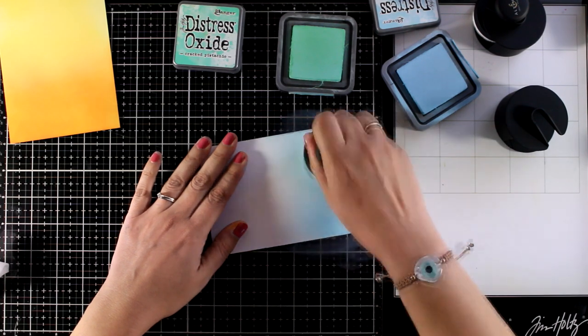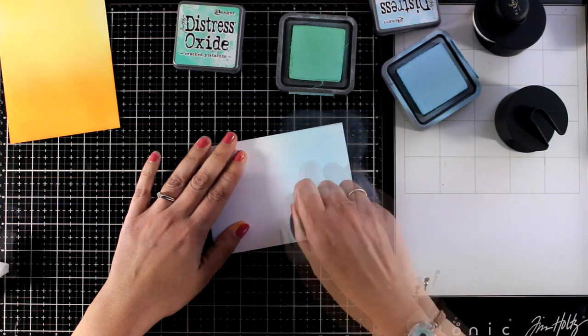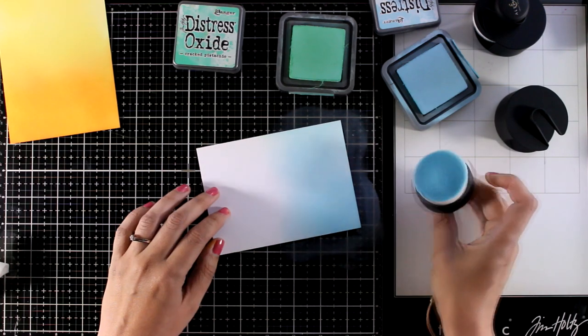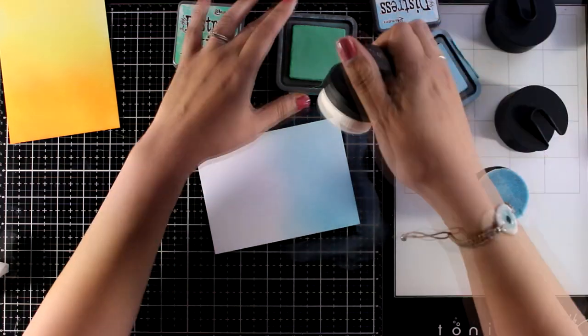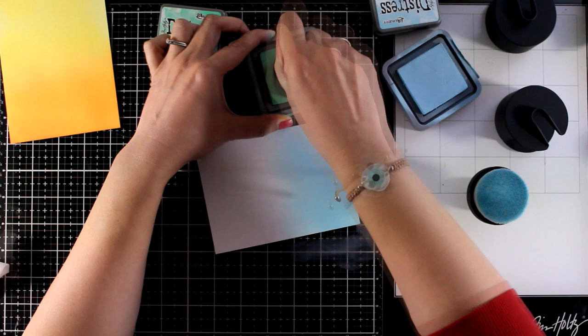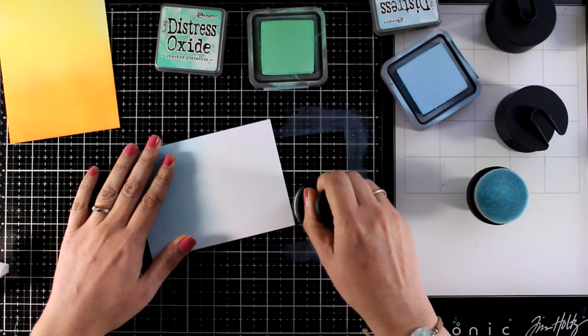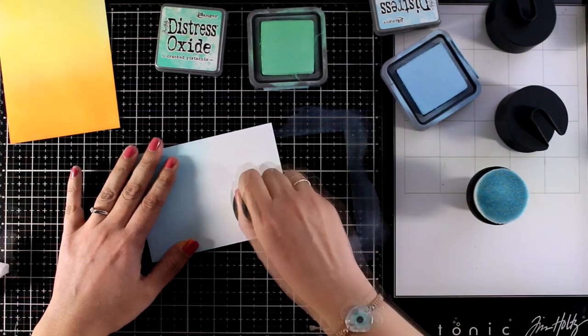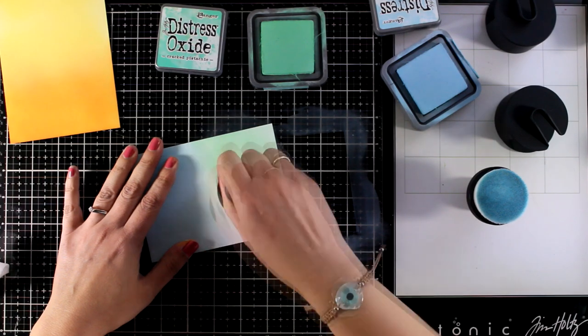So here I'm going to blend two colors again. I'm starting with Tumbled Glass and then I will switch to Cracked Pistachio. I'm not oversaturating my background as I want it to be nice and soft, which is going to help the flowers that I'm going to stick on top pop even more.